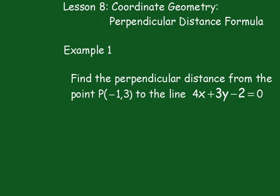Lesson 8: Coordinate Geometry — The Perpendicular Distance Formula. Example 1: Find the perpendicular distance from the point to line 4x plus 3y minus 2 equals 0.